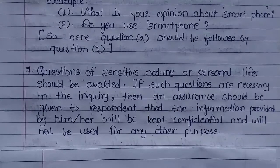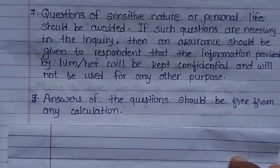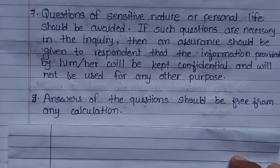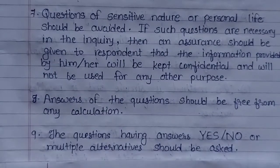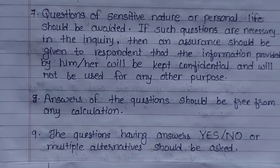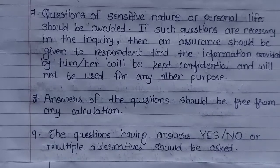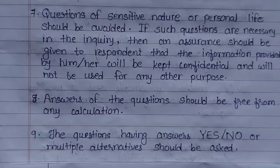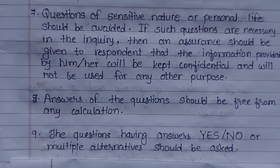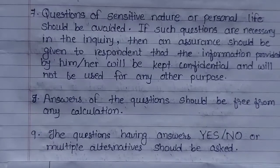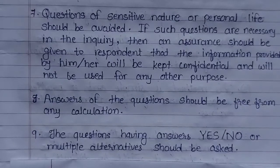Eighth point: answers to the questions should be free from any calculation — do not ask questions that require the respondent to calculate anything. And the last point: questions having answers in yes/no and multiple alternatives should be asked — mostly ask questions whose answers can be given as yes or no, or provide alternatives like MCQ options so respondents can easily tick the applicable category with minimal writing work. These are the 9 characteristics that an ideal questionnaire should have.